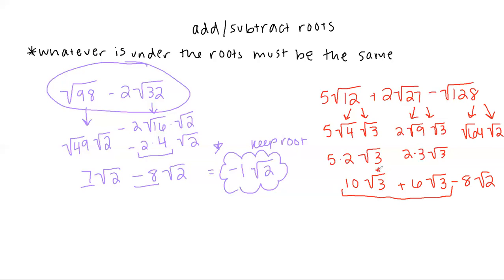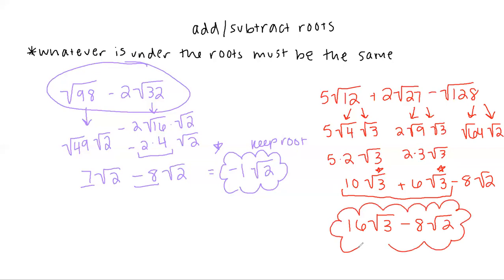Now we combine left to right. We can combine the root 3 terms: 10 plus 6 is 16, so we have 16 root 3. We cannot combine that with the minus 8 root 2, because root 3 is not the same as root 2 — whatever's under the square root has to be exactly the same number to combine further. So our final answer is 16 root 3 minus 8 root 2. Go ahead and fill out the Google form on Classroom, and email me if you have any questions on the lesson.